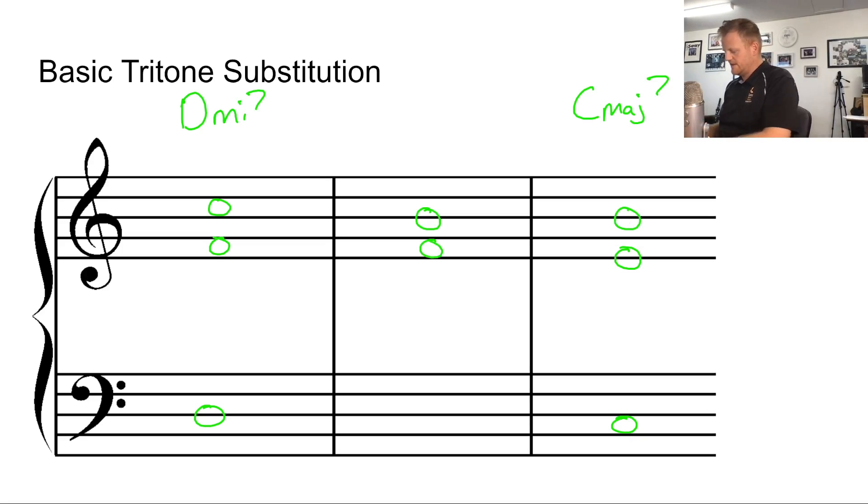Now the fun thing about a tritone substitution is that this is currently the third and the seventh of G7. However, if you move the bass note by three tones - so three tones away from G - it becomes the seventh and the third, the other way around. Three tones away from G is actually D♭, and so this makes a chord of D♭7. So this chord here, we have done a tritone substitution.